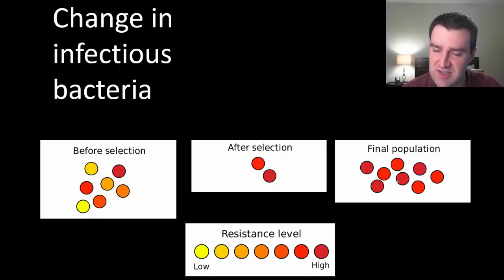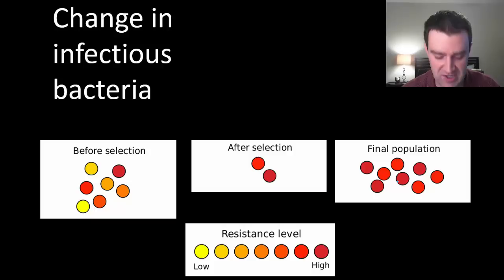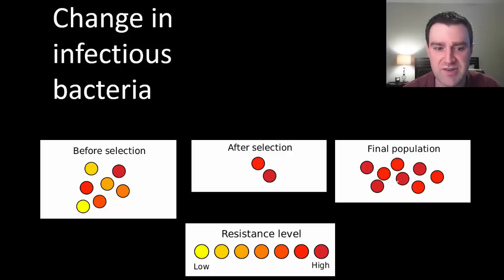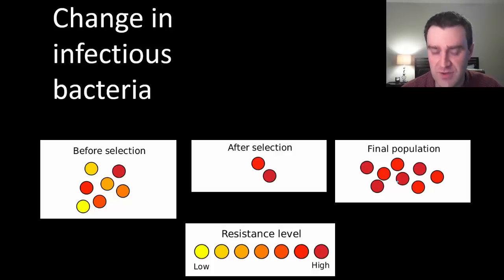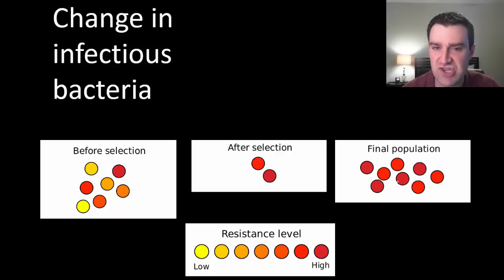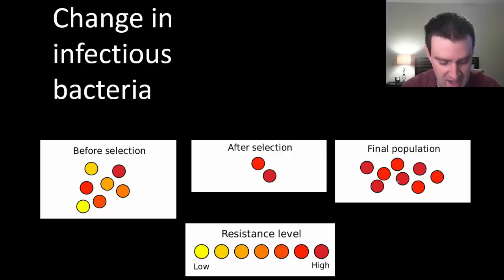We're going to send you to several explorations in this class that talk about how this is becoming more and more concerning in modern times. But to walk through Darwin's theory one more time, let's see if we can apply his four steps to explain how bacteria might have changed to become resistant to the medications that kill them.